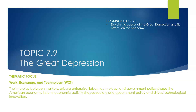Hello, and welcome back to Era 7 of the AP U.S. History Curriculum. The growth and prosperity of the 1920s is about to come to a screeching halt with the crash of the stock market in 1929, ushering in one of the most transformative periods in American history. In this video, we will be looking at Topic 7.9, The Great Depression, and in particular its causes, as well as what the government did to try and address it.